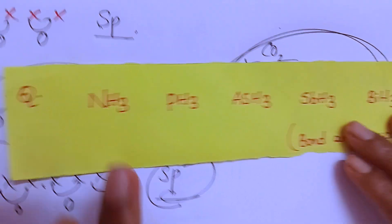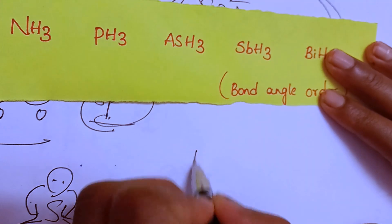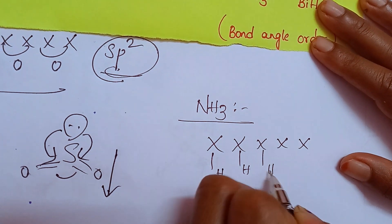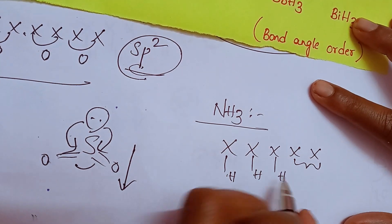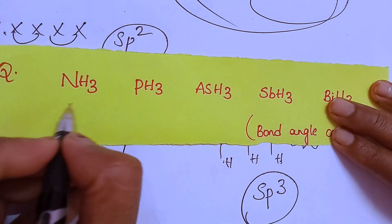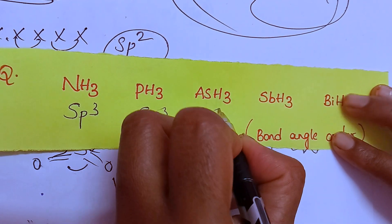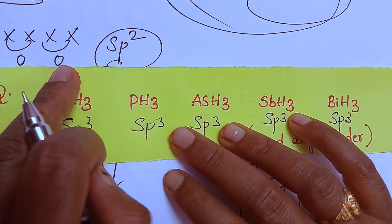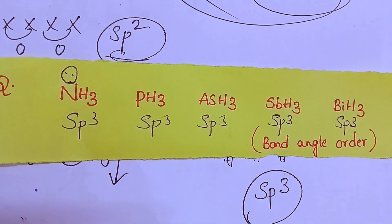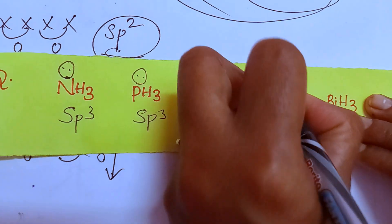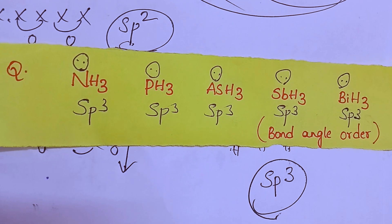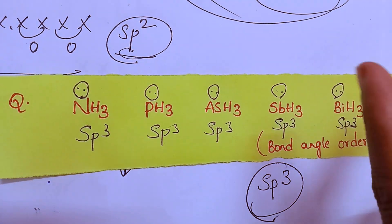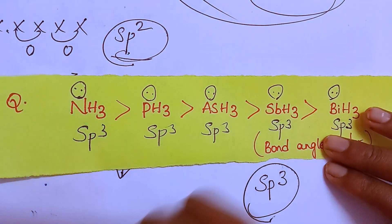Last example: NH3, PH3, SbH3, BiH3. Nitrogen has 5 valence electrons, each hydrogen forms 1 bond, remaining 2 electrons form 1 lone pair — hybridization is SP3 with one lone pair. You get SP3 for all of them. Same family. Bonded atoms are the same, lone pairs are present, so it is not perfect geometry — distortion will be there. Using trick number 3: electronegativity of the central atom is more, it draws electrons toward it, repulsion is more, so bond angle is more. Top to bottom, bond angle decreases.